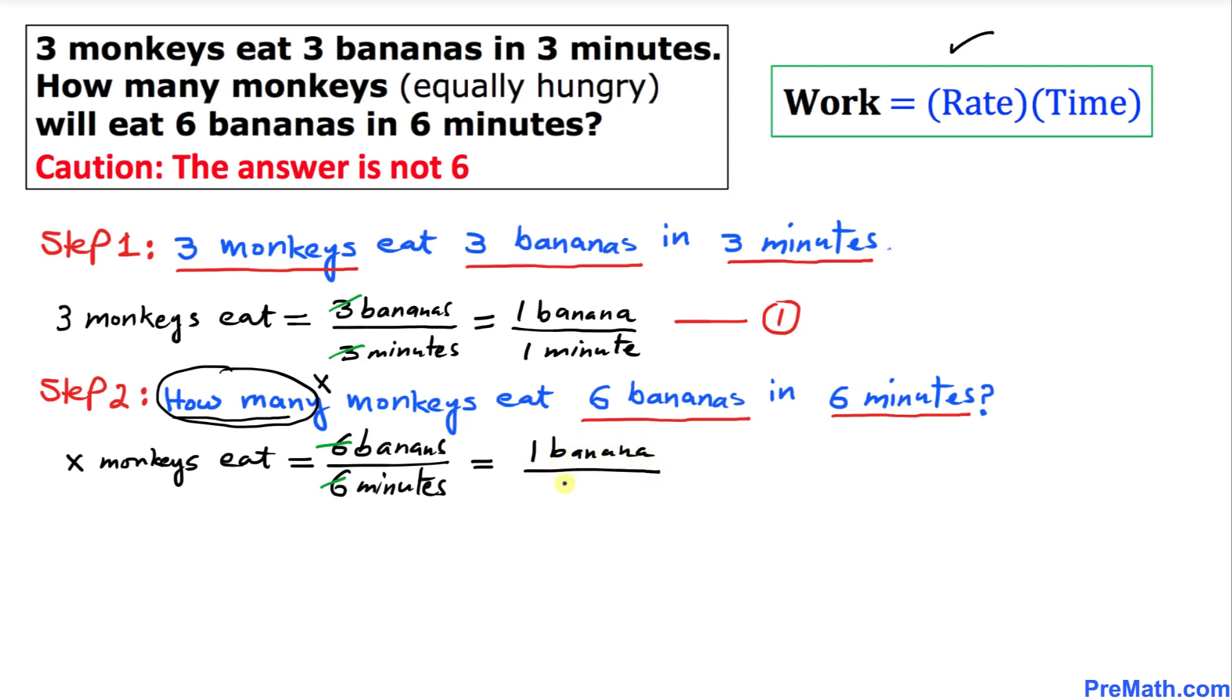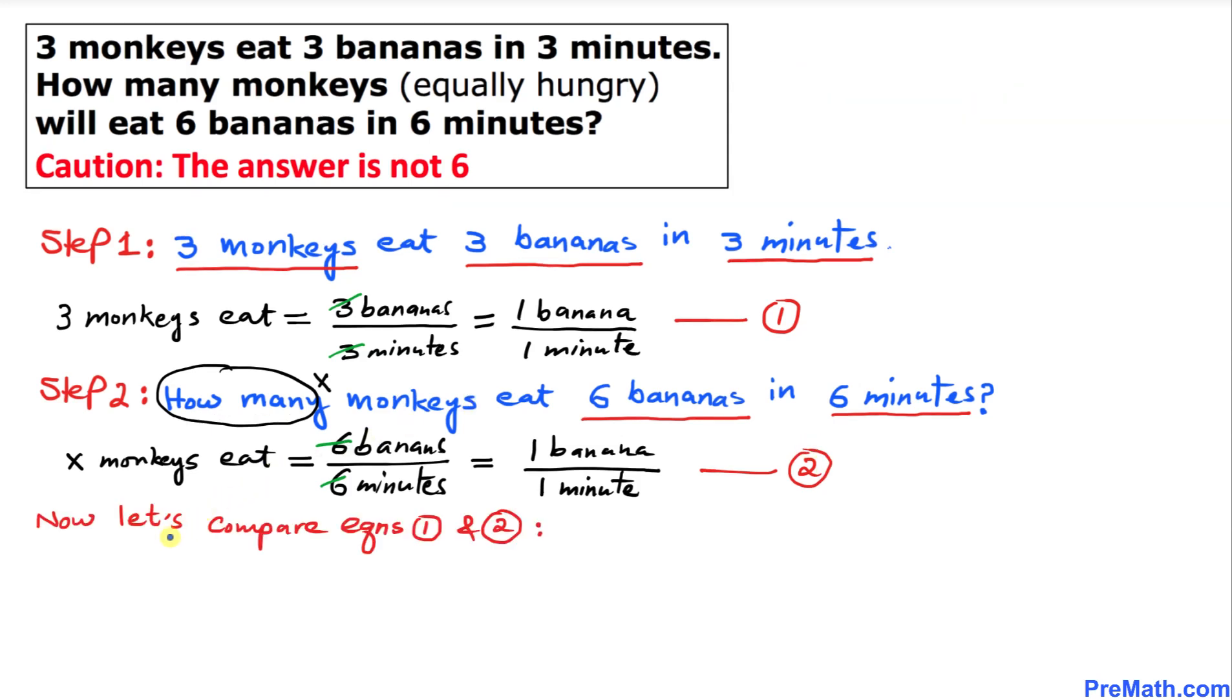Divided by one minute—that means one banana in one minute. And I'm going to call this equation number two.